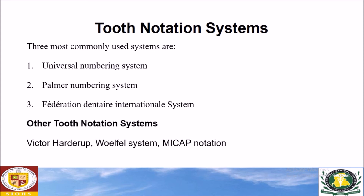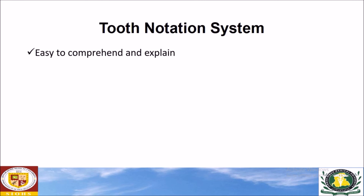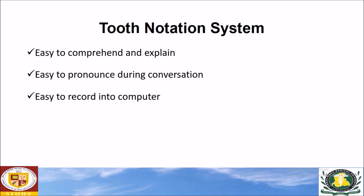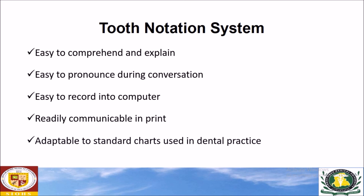An ideal tooth notation system should have the following properties: it must be easy to comprehend and explain; it should be easy to pronounce during conversation, as writing and typing the full tooth name is difficult compared to referring to it with a number or alphabet; it must be easy to record into a computer; it should be readily communicable in print form; and it should be easily adaptable to standard charts used within dental practice.